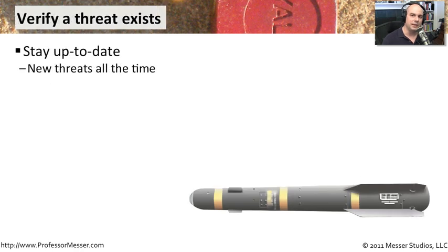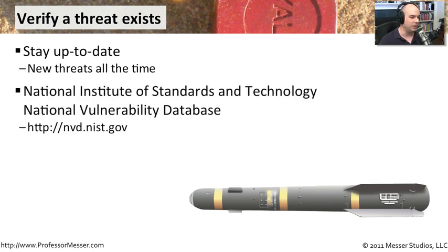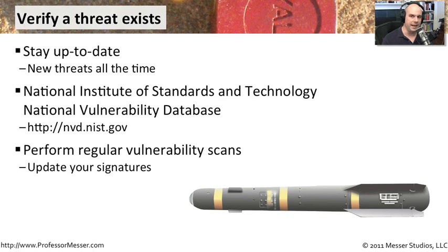If you're going to be doing penetration testing, you need to understand what the latest vulnerabilities might be for those operating systems, so you have to stay up to date with what the latest threats are. The challenge is applications may have been around for a long time, but sometimes we're just finding new threats in some very old applications. If you don't keep up with that, you may never know there was a new way to get in. The National Institute of Standards and Technology has a national vulnerability database at nvd.nist.gov. You can also constantly do vulnerability scans using those new methods you've learned about, and make sure whatever scanner you're using has the latest signatures so you can stay up to date.